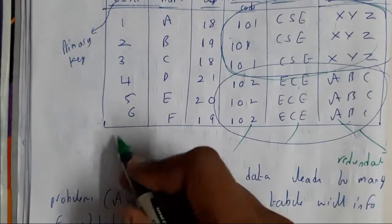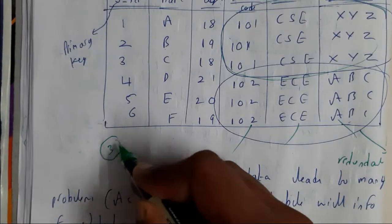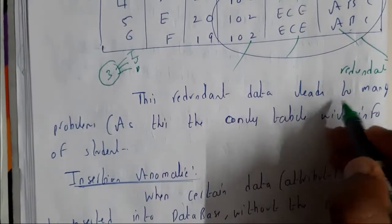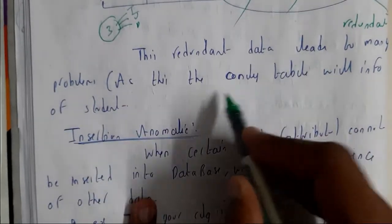Redundancy will be causing three anomalies or three issues: insertion anomaly, updation anomaly, and deletion anomaly. Redundancy data leads to many problems.